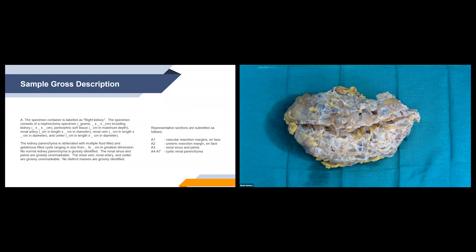Here is a sample gross description of a polycystic kidney. The first paragraph describes what the specimen includes. The second paragraph covers main and additional findings: the kidney parenchyma is obliterated with multiple fluid-filled and gelatinous-filled cysts ranging in size from blank to blank in greatest dimension. No normal kidney parenchyma is grossly identified. The renal sinus and pelvis are grossly unremarkable. The renal vein, renal artery, and ureter are grossly unremarkable. We always include a pertinent negative noting that no distinct masses were grossly identified.